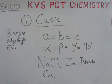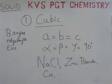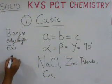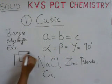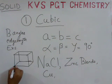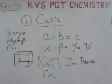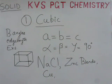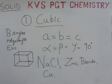The first is the cubic primitive unit cell — the basic cube you studied in lower classes. It has three edges perpendicular to each other and all equal in size. So a = b = c, meaning all three sides are equal in measurement, and the bond angle is 90 degrees. Examples include NaCl, zinc blende, and copper.